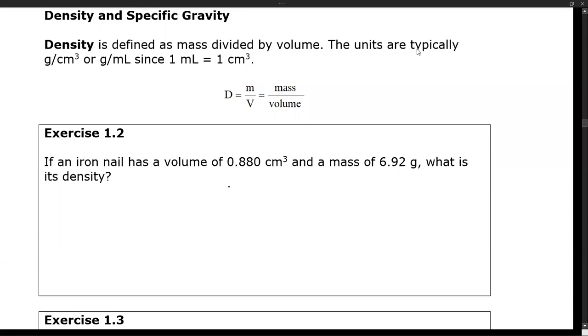So we'll look at this next problem. If we get an iron nail with a volume of 0.880 cubic centimeters and a mass of 6.92 grams, what is its density?